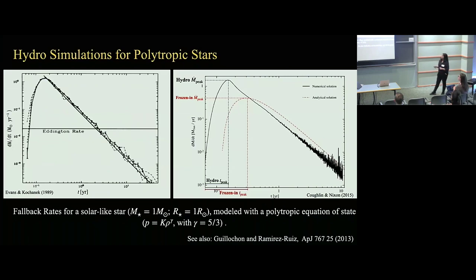Comparing the prediction of the hydro simulation with the frozen-in prediction, specifically looking at the peak timescale — the x-intercept — the frozen-in is in agreement with the hydro simulation to within a factor of two, which is not that bad. So that can lead us to conclude that doing all these expensive hydro simulations is not entirely necessary; you can just use the frozen approximation and calculate the effects of stellar structure on fallback rate.